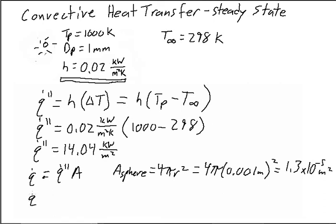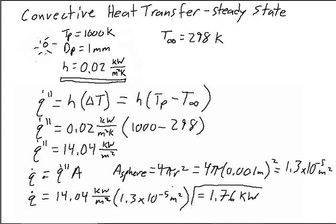So we can find our heat loss is equal to 14.04 kilowatts per meter squared times our surface area of 1.3 times 10 to the negative 5th meters squared. And that's going to be equal to 1.76 kilowatts.